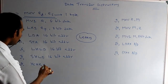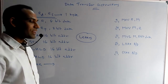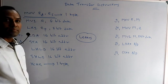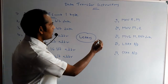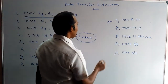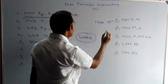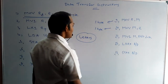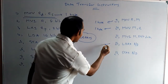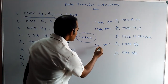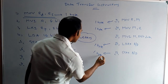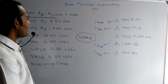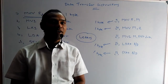Similarly, if you observe XCHG, only letters are there, and that is why it is also a 1-byte instruction. If only letters are present, it will always be a 1-byte instruction.